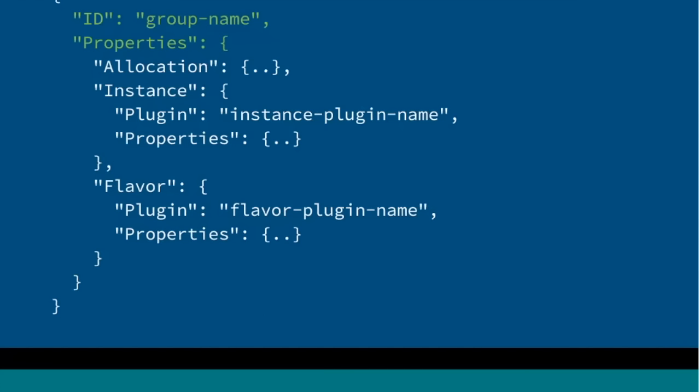To step back and explain how this is actually set up: here's a skeleton of a group configuration with InfraKit. The top two fields — that's all that InfraKit knows about. It knows the ID for a group and that there are some properties. Beyond that, InfraKit itself knows nothing more.